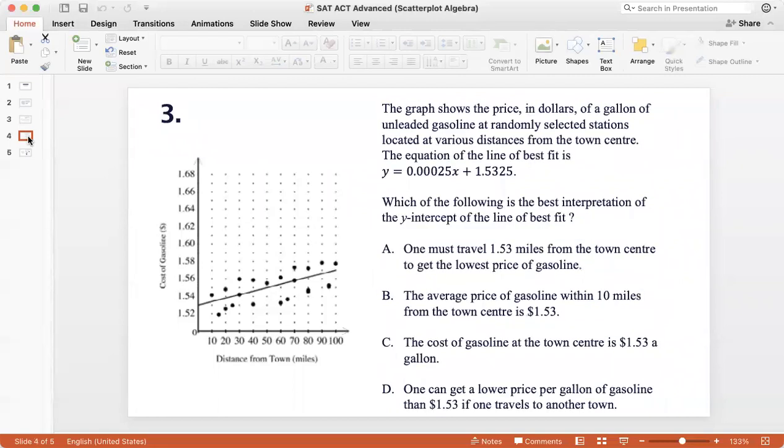Okay, question three, the same question, but this time we have been asked to interpret the y-intercept of the line of best fit. So we know from the equation of the line that is given to us that the y-intercept is 1.5325. What does this mean? That if you do not go anywhere from the town center, that is, you stay at the town center, the cost of gasoline would be 1.53 dollars per gallon. So the best interpretation is the cost of gasoline per gallon at the town center is 1.53 dollars. So that is option C.